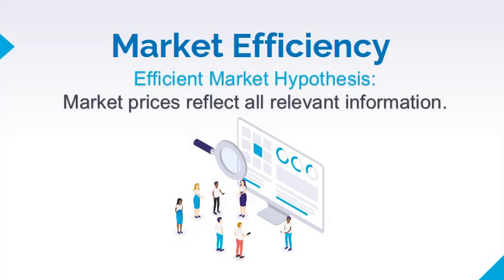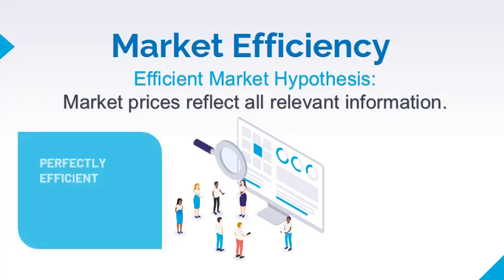The efficient market hypothesis states that market prices reflect all relevant information about an asset or a firm. A perfectly efficient market is where market participants have access to perfect information and where any changes to this information are acted upon quickly. As an effect, an asset's market value is always equal to its intrinsic value.